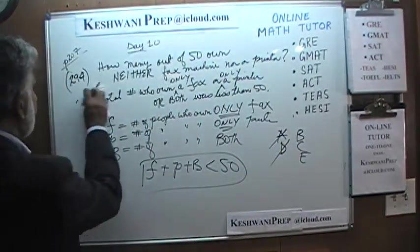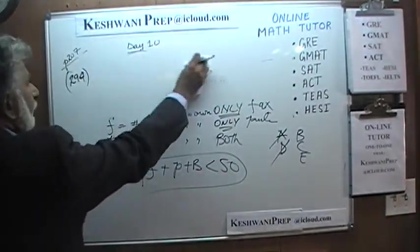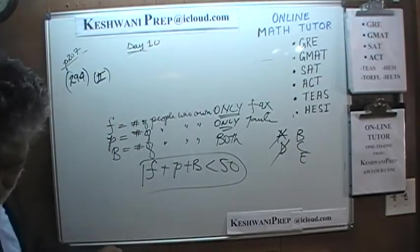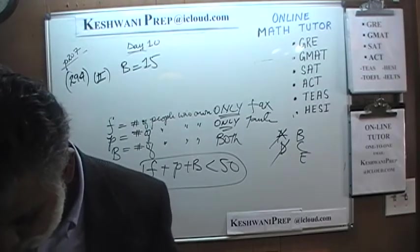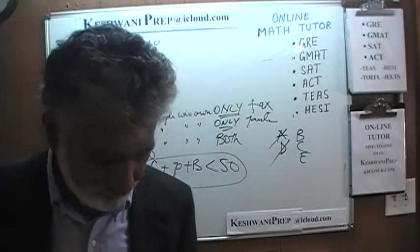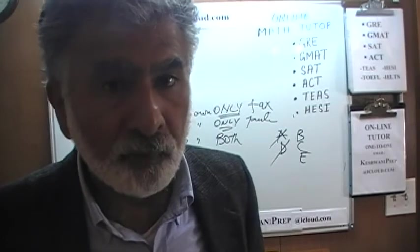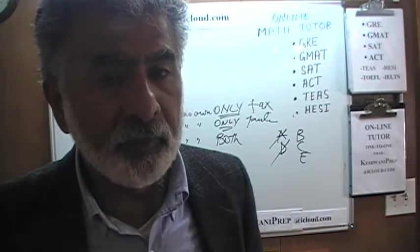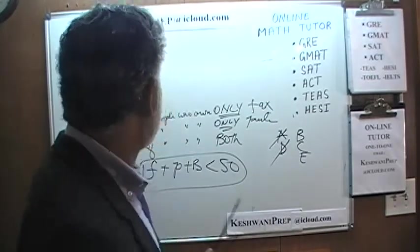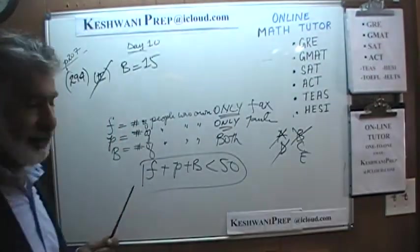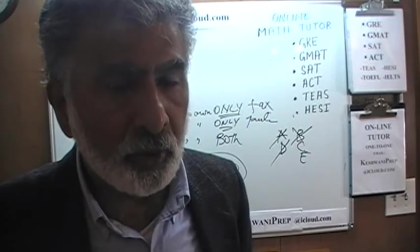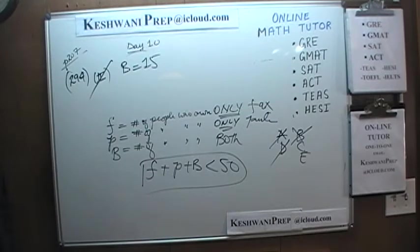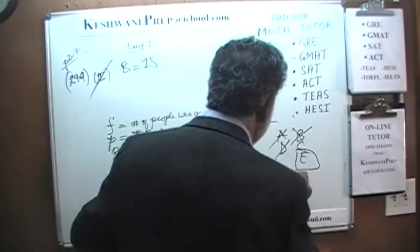The answer cannot be B — it would have to be either C or E. Putting the two statements together: we know fewer than 50 people own either only a fax machine, only a printer, or both; and exactly 15 own both. But putting them together still does not tell us how many own neither. The answer is E.